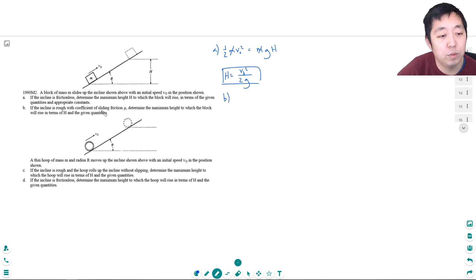If the incline is rough with the coefficient of sliding friction mu, determine the maximum height for which the block will rise in terms of h and the given quantities. Okay, so now there's really two ways to do this. You could attempt to do this by work, by still energy.